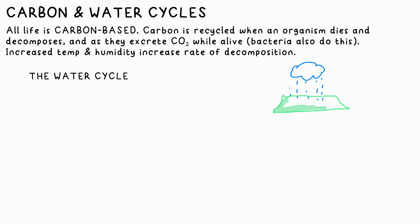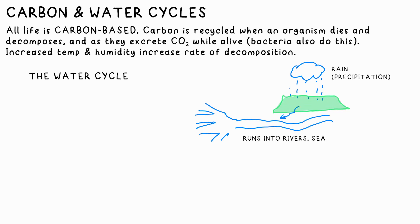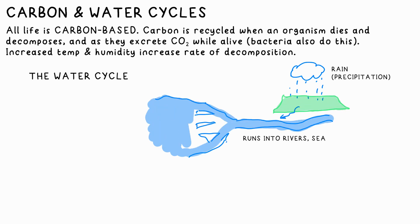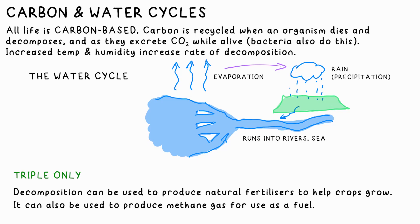Water also follows a cycle. Rain falls — precipitation — then runs into rivers, then into the sea, then it's evaporated, and the cycle continues. Farmers utilise decomposition to produce natural fertilisers that can then be used on crops. It can also be used to produce methane gas to be used as fuel.